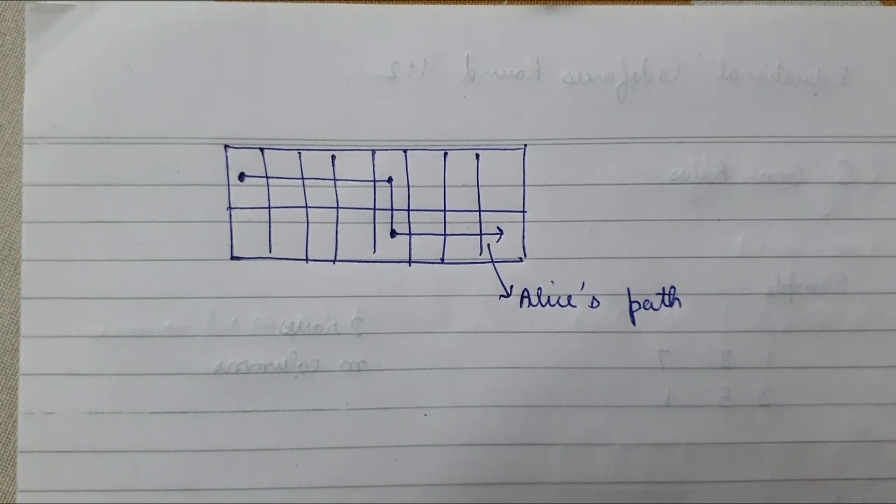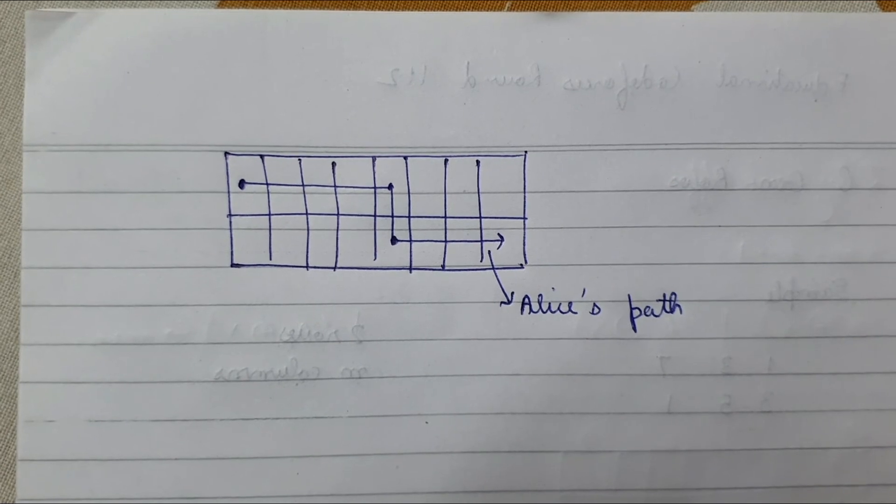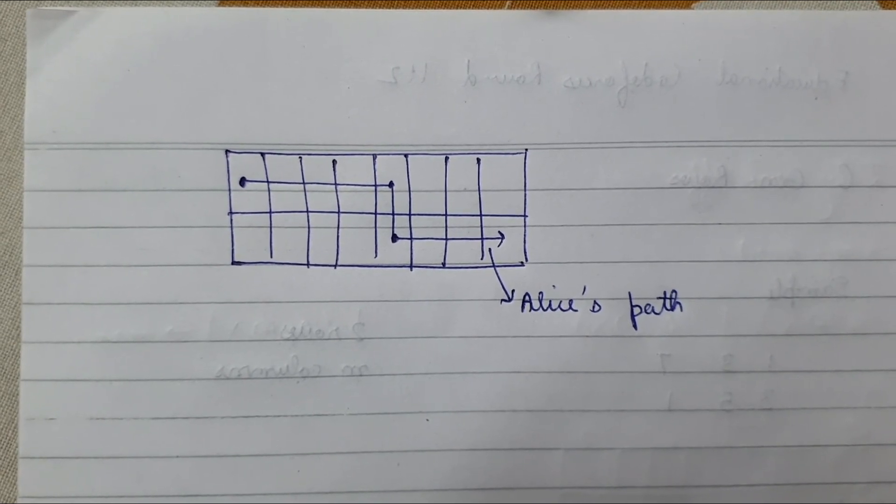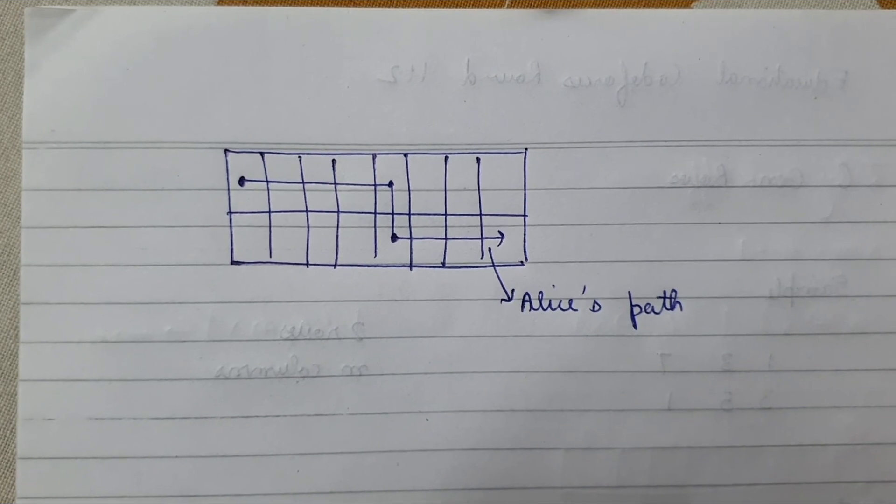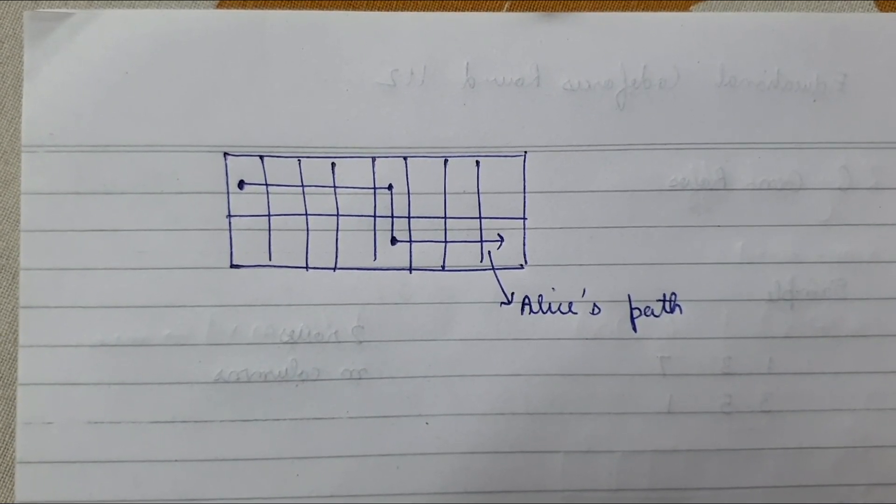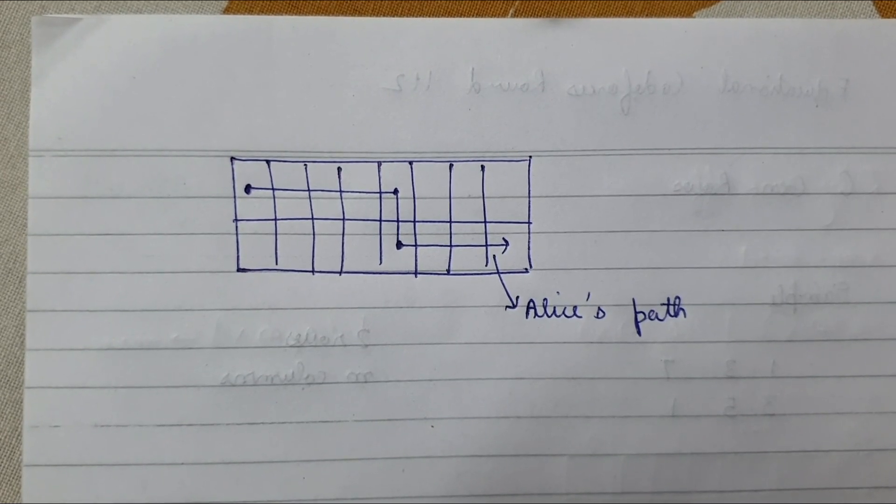So if Bob chooses a column that is before Alice, he can get maximum score if he goes down on the first column. Otherwise, if he chooses to go after the Alice column, he can get the maximum score by traversing the complete first row.